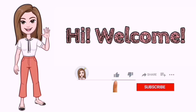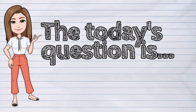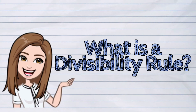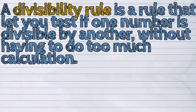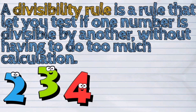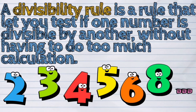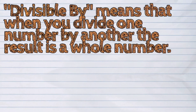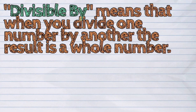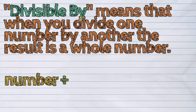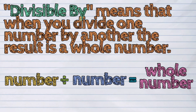Hi! Welcome to iQuestionPH! Today's question is: What is a divisibility rule? A divisibility rule is a rule that lets you test if one number is divisible by another without having to do too much calculation. Divisible by means that when you divide one number by another, the result is a whole number.